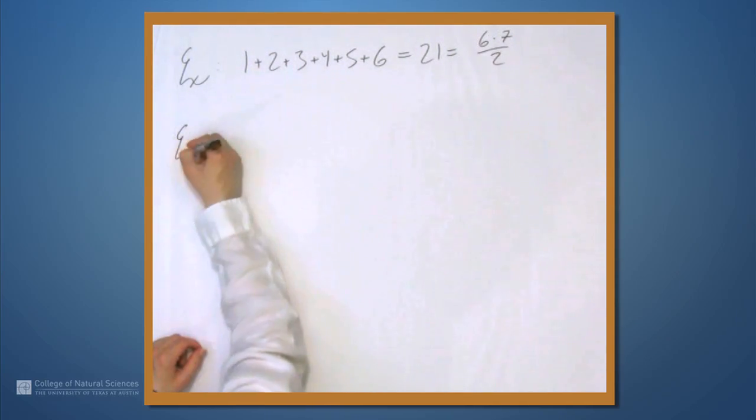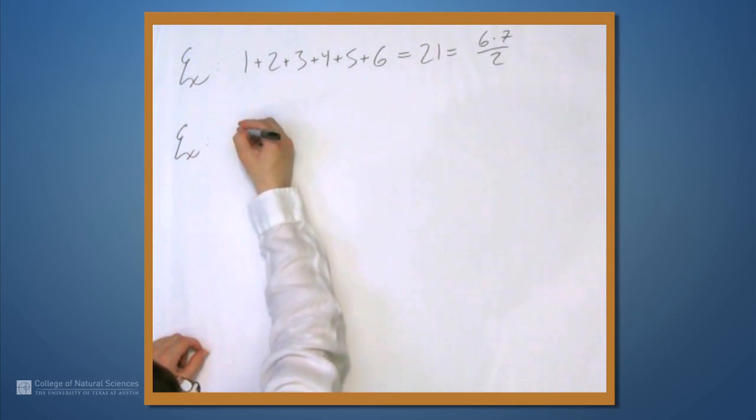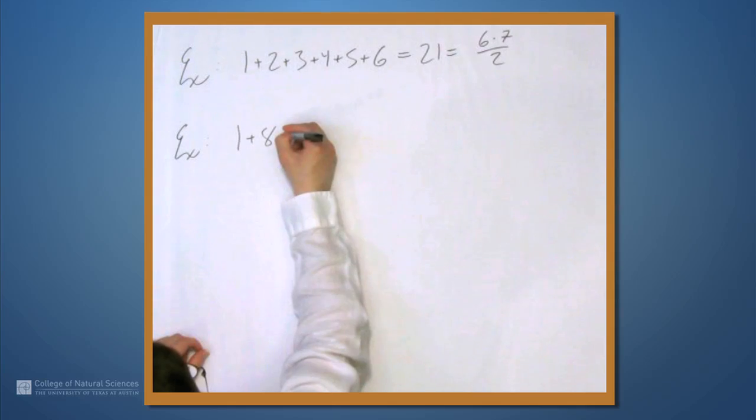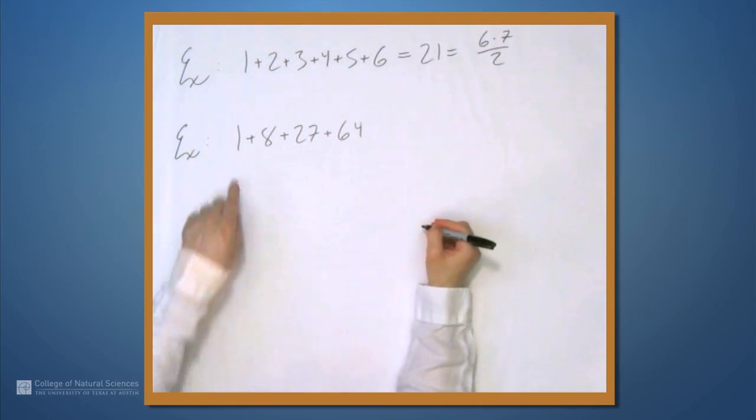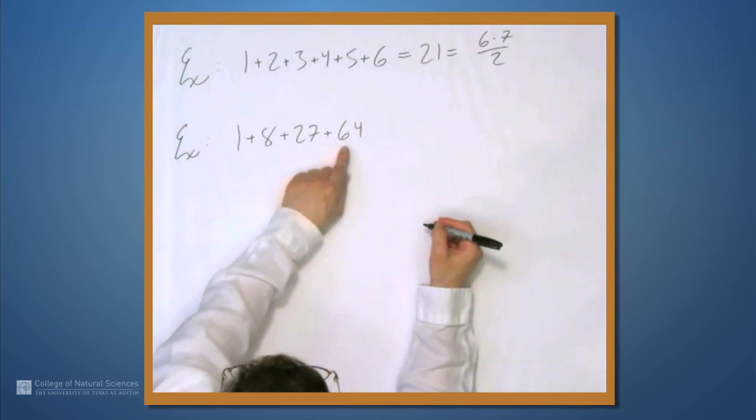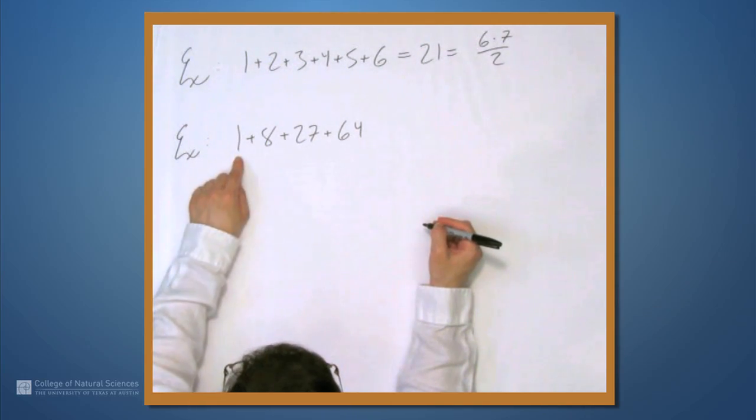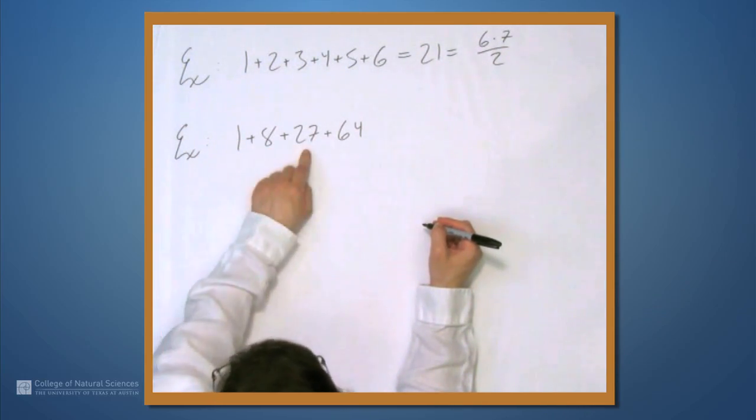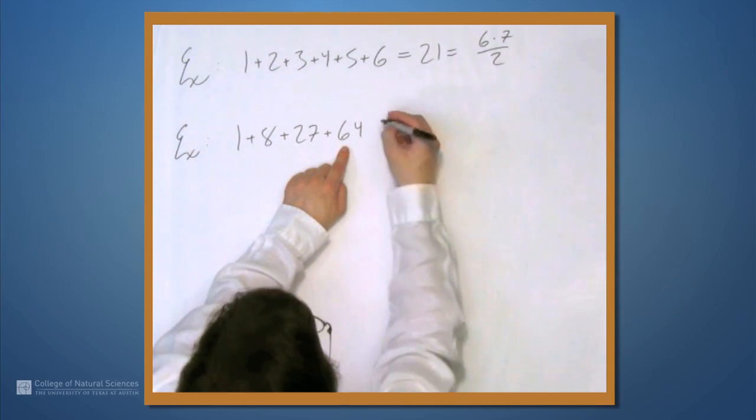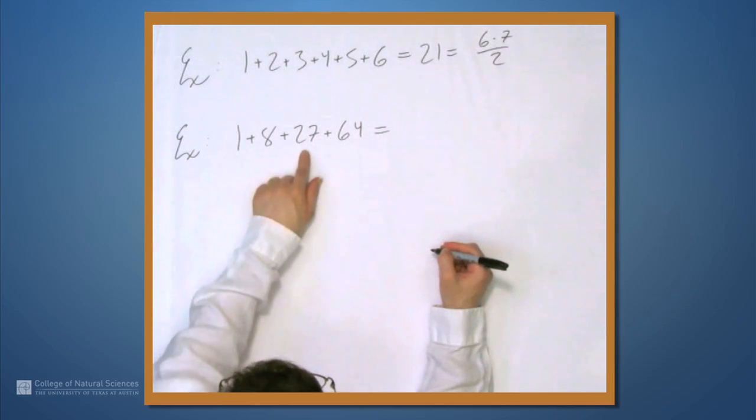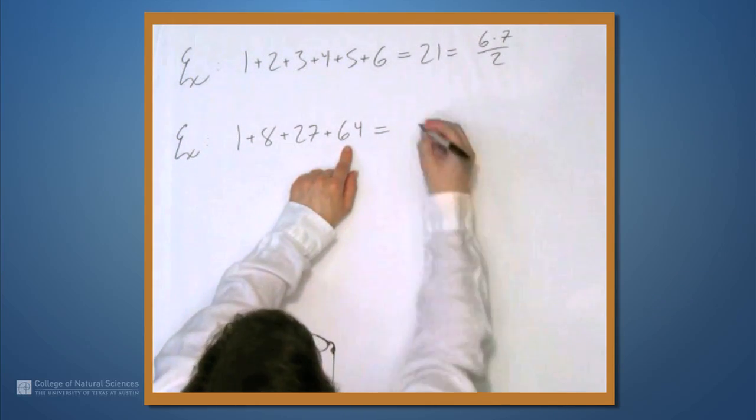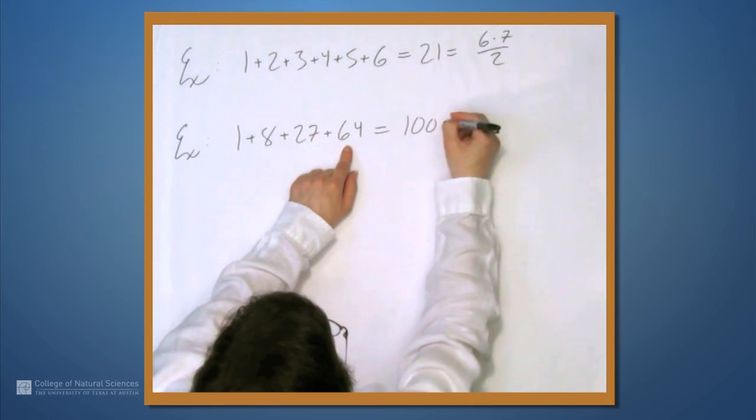Let's look at one more example. Let's look at 1 plus 8 plus 27 plus 64. This is the sum of the first four cubes, right? 1 is 1 cubed, 8 is 2 cubed, 27 is 3 cubed, and 64 is 4 cubed. This sum is 100.